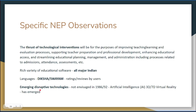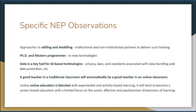Emerging disruptive technology: earlier we never thought there would be any disruption in education. But during lockdown and COVID-19, we saw that schools were shut down and we started using new technologies — artificial intelligence, 3D, 7D virtual reality. These new things have emerged. When we talk of the 1986 and 1992 policies, these things were not mentioned. The days have changed, technology has changed, and that is why technology has to be utilized.